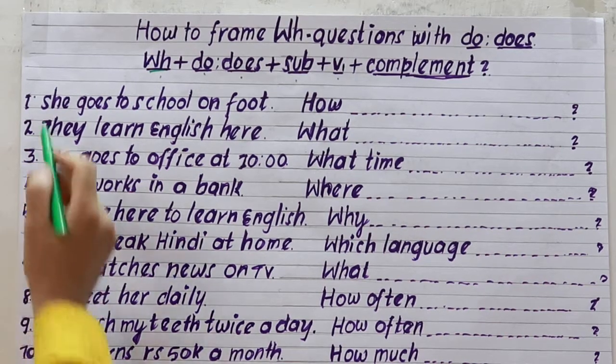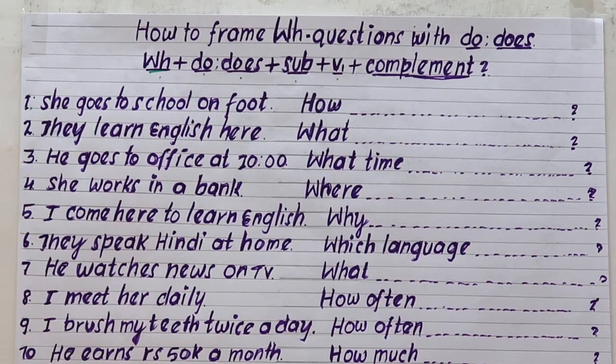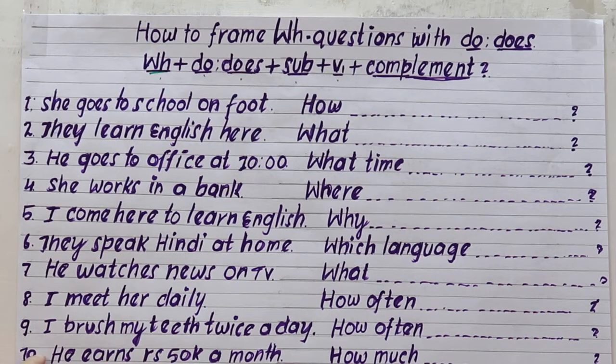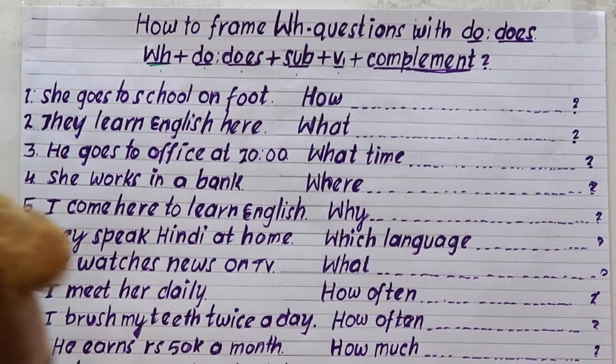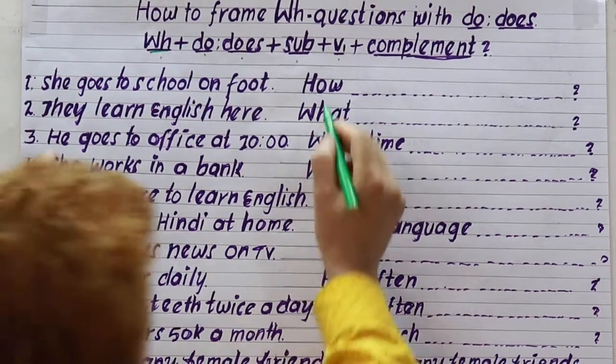Suppose the first question — the answer is: She goes to school on foot. She goes to school on foot. That's the answer: she goes to school on foot.